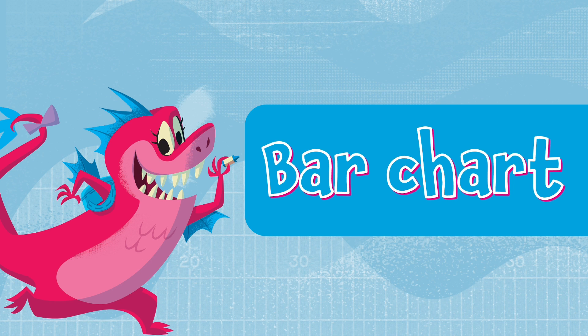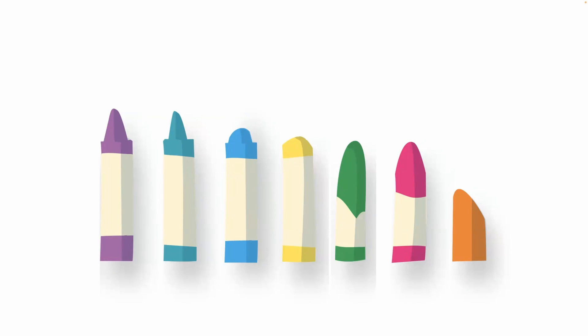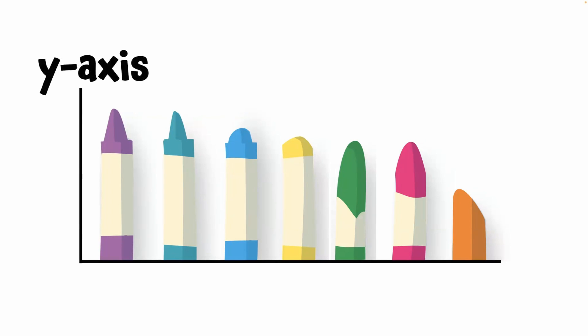Let's make it look a little more like an ordinary graph. I'll add a horizontal line on the bottom. This is the x-axis. Let's put a vertical line on the left. This is called the y-axis.